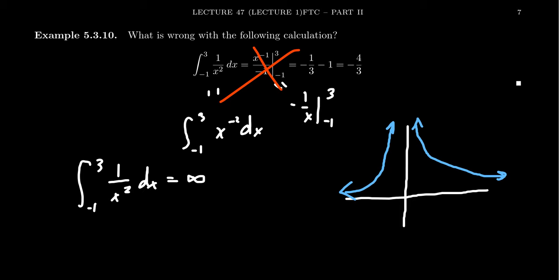And so if we go from negative 1 to 3, we are trying to capture this region right here and this region right here. And so as you go towards that vertical asymptote, these rectangles are taller and taller and taller, and the area under the curve gives us infinity.